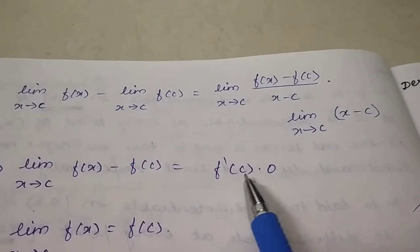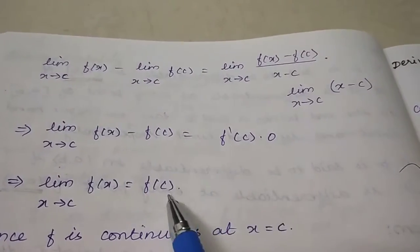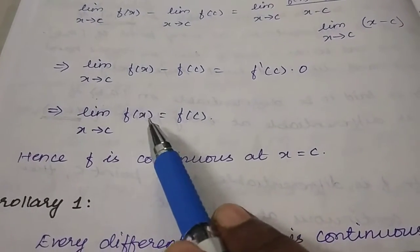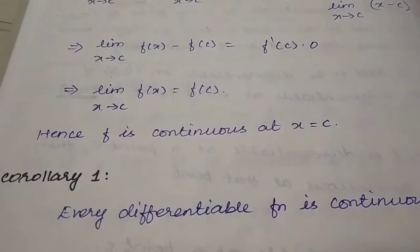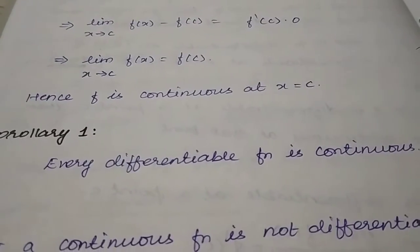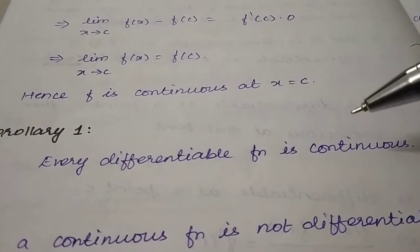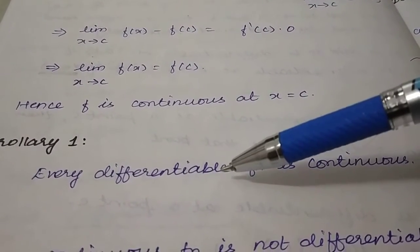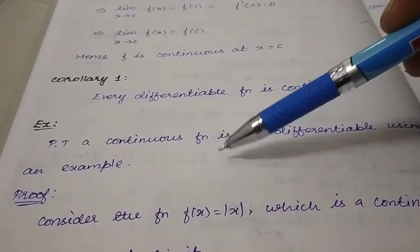So this is the definition of continuity, and we can say f is continuous at x = c. This theorem can be generalized: every differentiable function is continuous. However, the reverse is not true — a continuous function may or may not be differentiable.